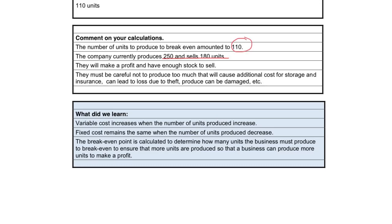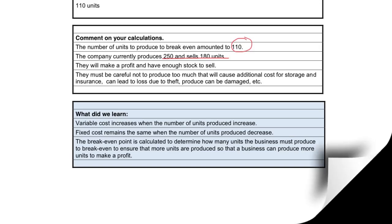So what did we learn today? Variable cost increases when the number of units produced increases — if we make more units, we will use more material and more laborers, so the cost will increase. Fixed cost remains the same no matter how many units you make, so the rent, the depreciation, and the salary of the factory manager will stay the same. The break-even point tells you how many units must be produced so that you don't make a profit and you don't make a loss. You must ensure that you make more units than this break-even point in order to make a profit.